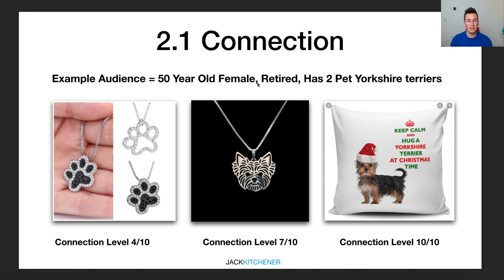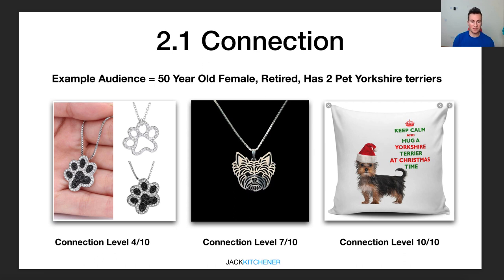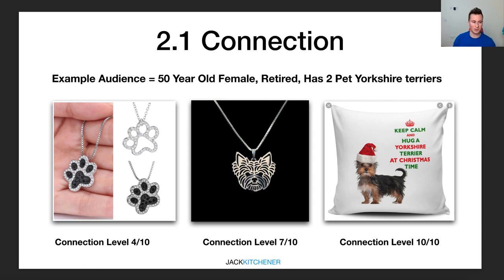We can actually go one level further and increase the connection by matching it with the current time of year. For example, a cushion with a Yorkshire Terrier image — she owns that breed, and it's also a Christmas-themed cushion. So there's another connection on another level. We started with a broad connection, went more specific with a breed-specific product, and now we're also matching it with the time of year. That's why this one gets a connection level of 10 out of 10 — it's purely relevant for this time of year and specific to the Yorkshire Terrier she owns.